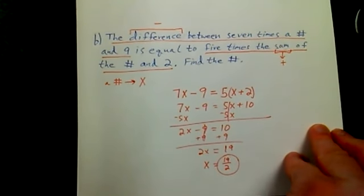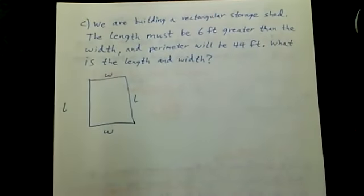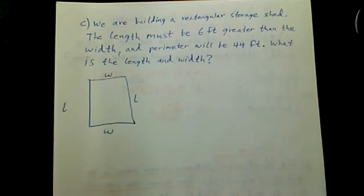All right, one more problem here. We are building a rectangular storage shed. The length must be six feet greater than the width, and the perimeter will be 44 feet. What is the length and the width? So there's two parts. So I drew a little picture here.